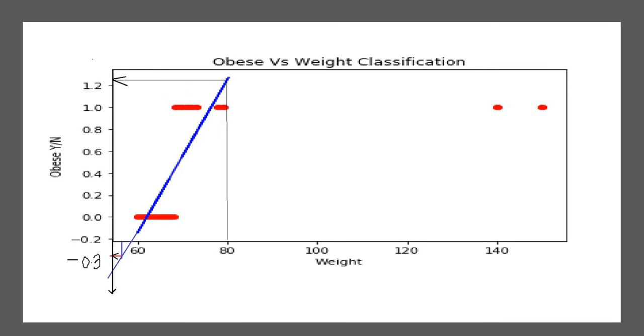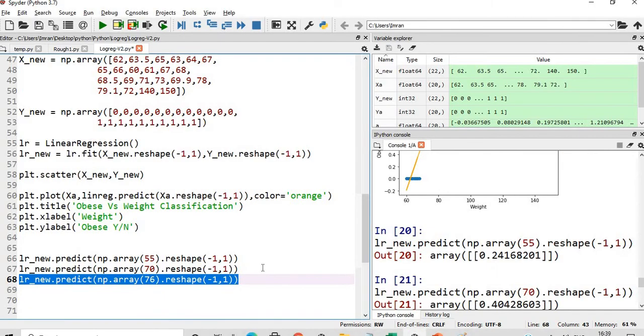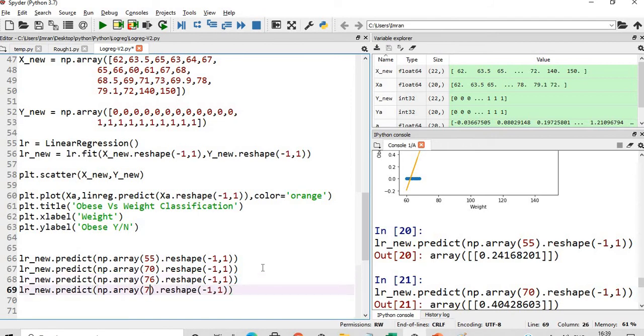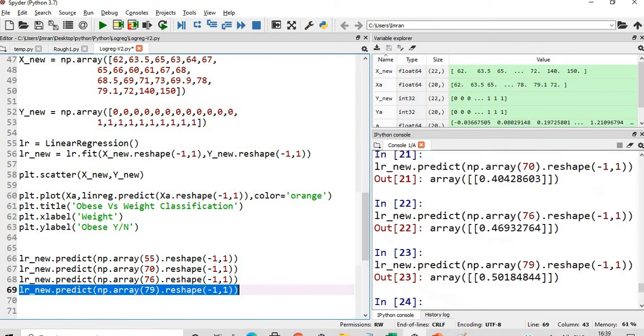This is how I was getting my threshold value. Now for the new model, we'll check for different weights. For 55 it's very low at 0.2. For 70 it's around 0.40. For 76 weight the threshold value is 0.46. It lies here, coming here and going here to 0.46 somewhere around here. It's still not 0.5, so we need to go as near as possible.